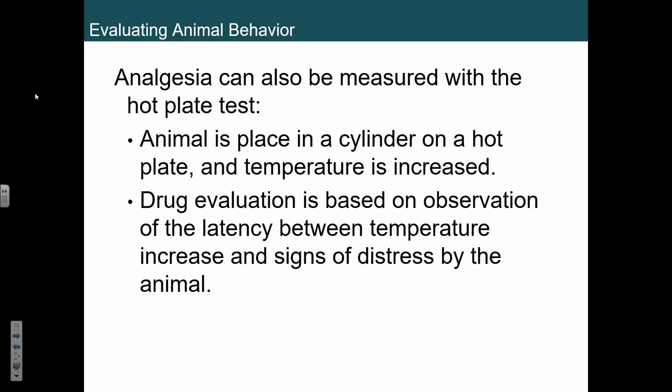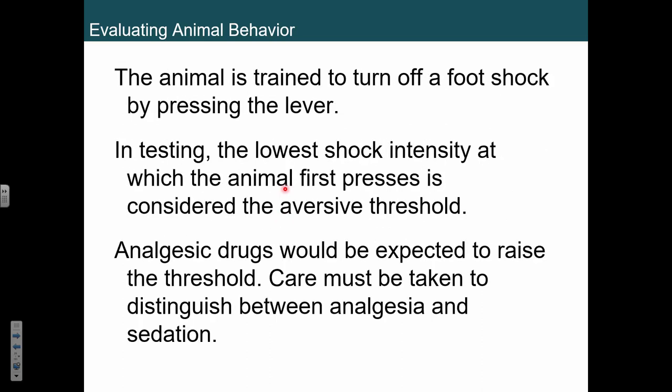They also use a hot plate test — you can see how much the rat moves around or how distressed it looks. There's going to be some space; it's going to be in a cylinder above the plate, kind of like a double boiler. There's also foot shock — you can train the animal to turn it off. If you were testing an analgesic, you could give a small shock, and if they don't feel it, they won't try to turn it off.